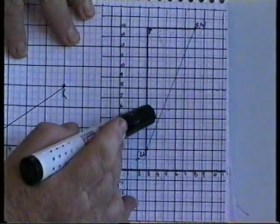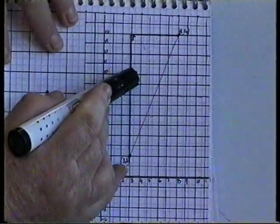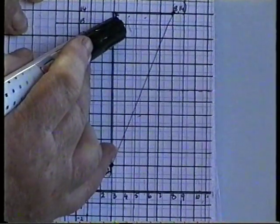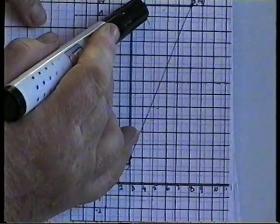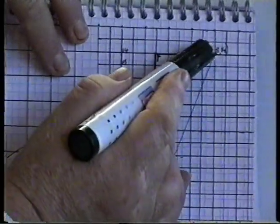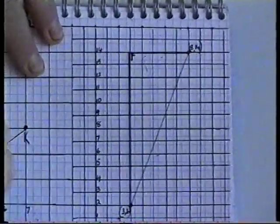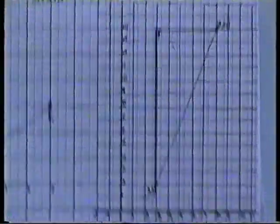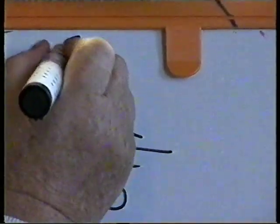One, two, three, four, five, six, seven, eight, nine, ten, eleven, twelve. You went up twelve, and across one, two, three, four, five. Our famous twelve and five. So the slope of that line, you went up twelve, and across five. That's the slope of the line.